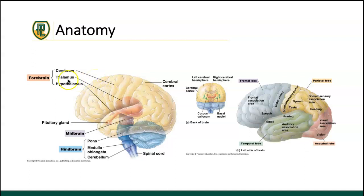The thalamus routes sensory information to appropriate cerebral areas and regulates consciousness, sleep, and alertness. The hypothalamus, located just below the thalamus, maintains water balance, regulates body temperature and homeostasis, and contributes to regulating hunger, thirst, and sleep. If a patient continues to be chronically dehydrated, we may refer them out to rule out hypothalamic dysfunction.